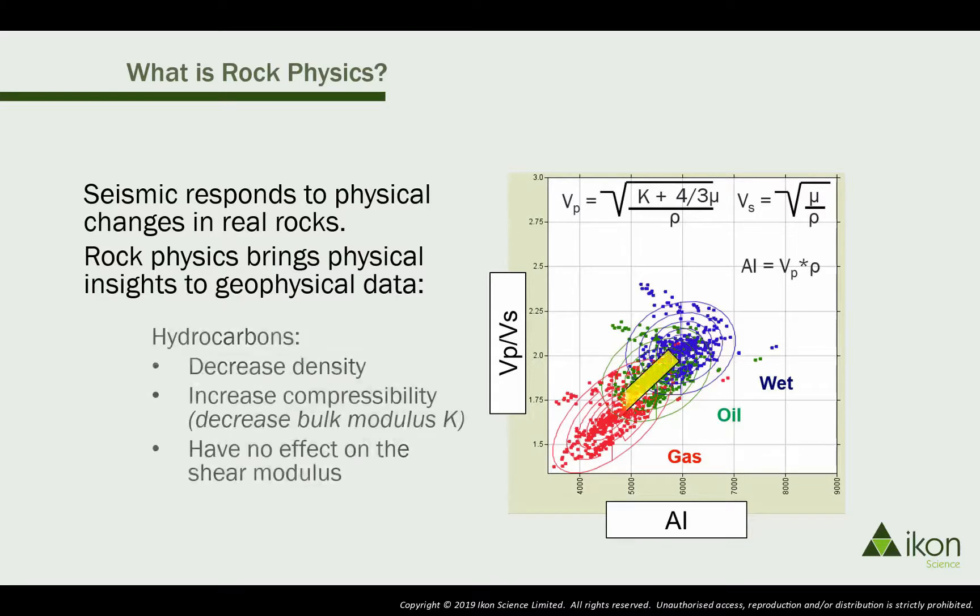Introducing a lighter more compressible fluid reduces both the acoustic impedance and the VP VS ratio, as VP and density are both reduced while VS remains fairly constant. This shows how a geological property can affect the elastic and seismic properties of the rock as a whole.